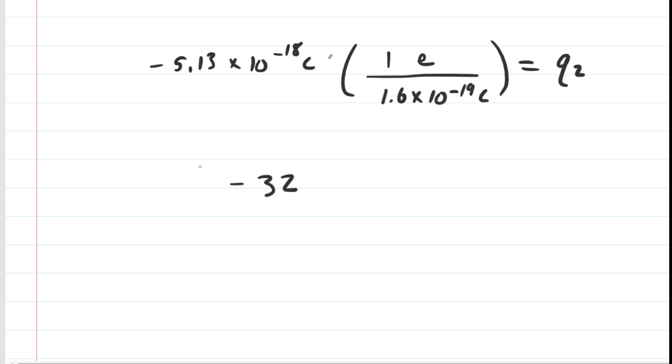The coulombs cancel and we're left with E. So as a multiple of E, we can see that the charge Q2 is equal to negative 32 E.